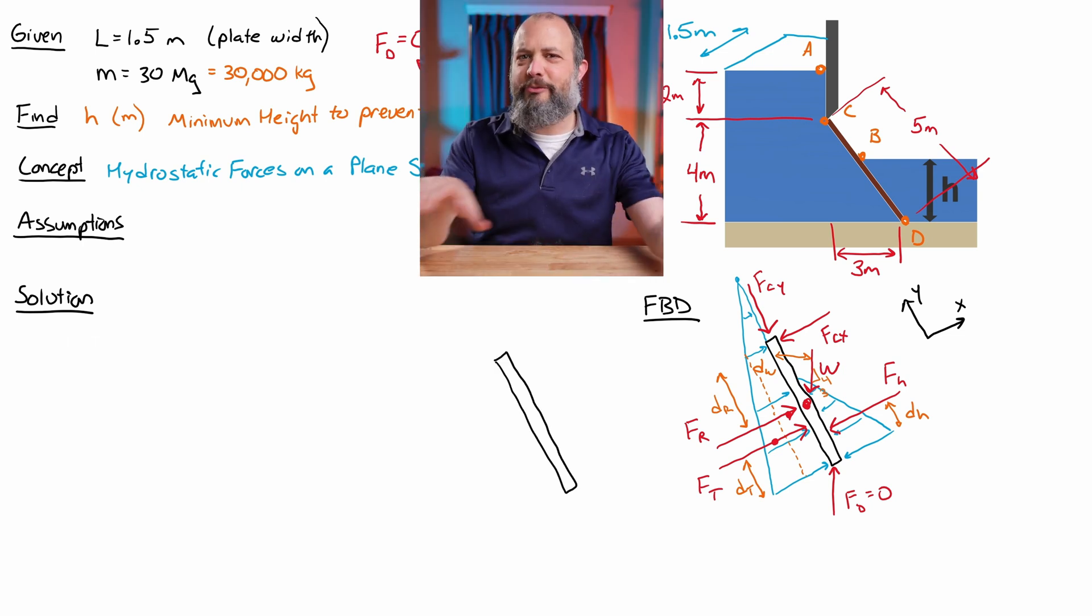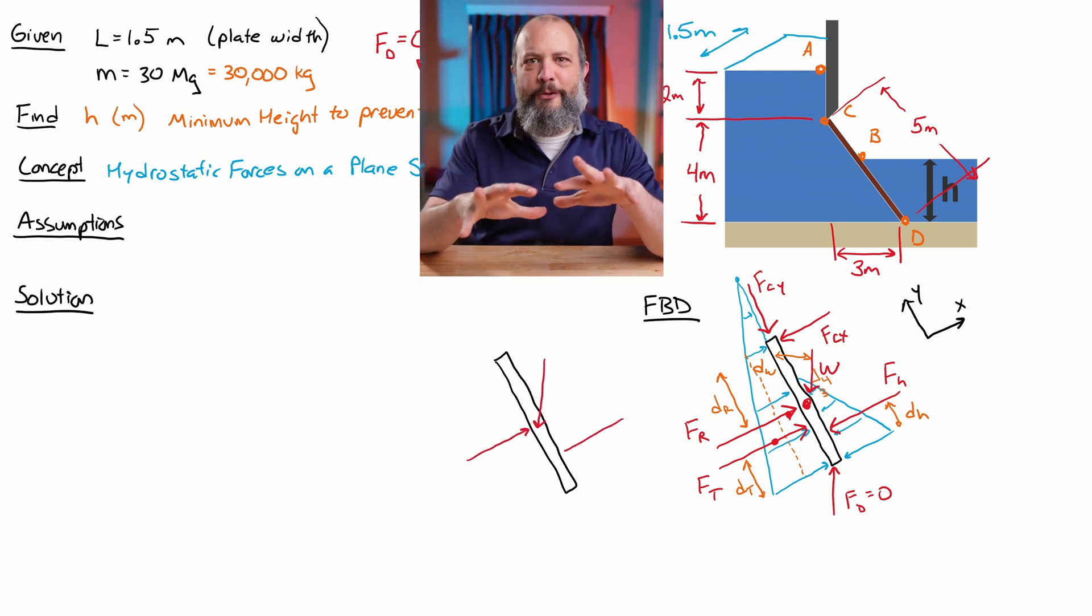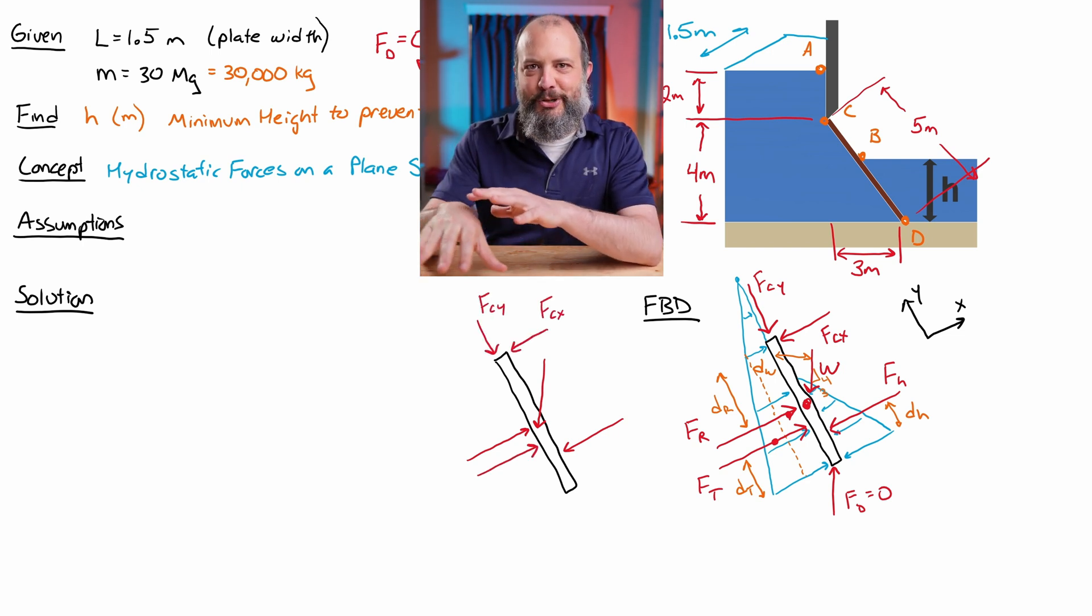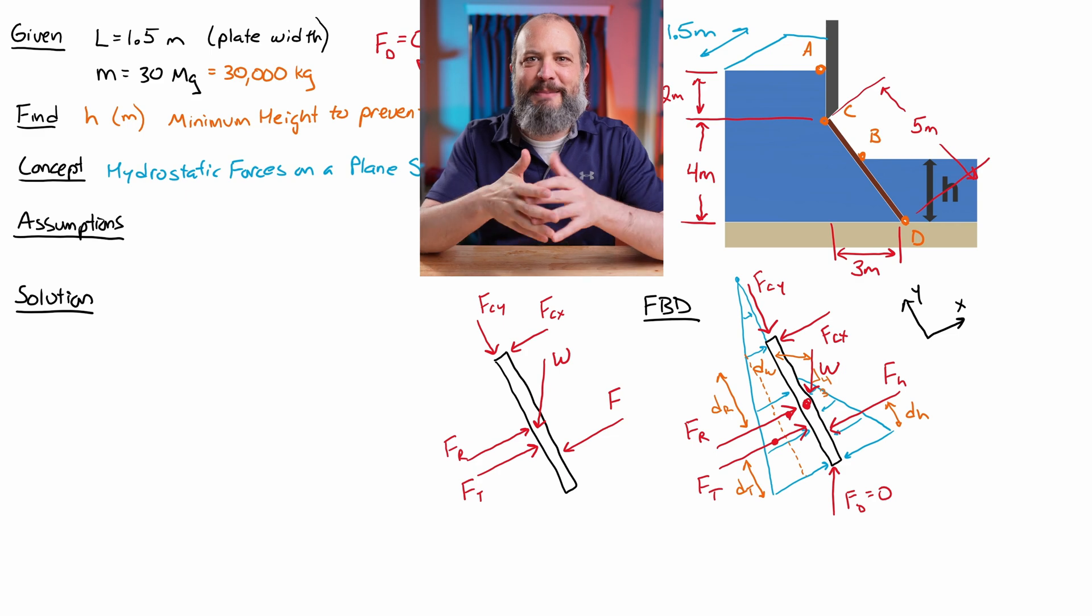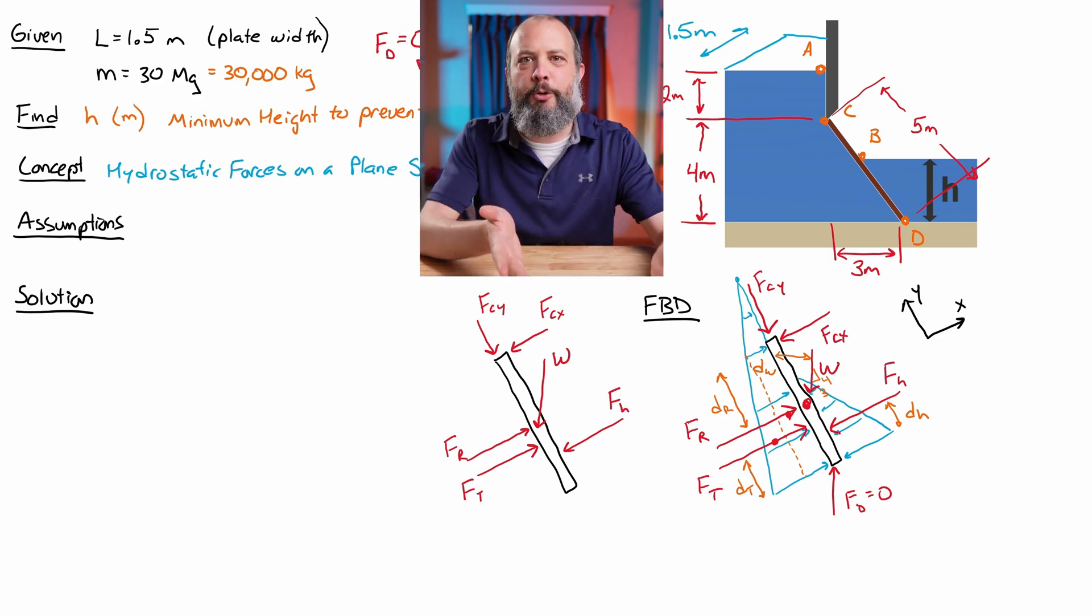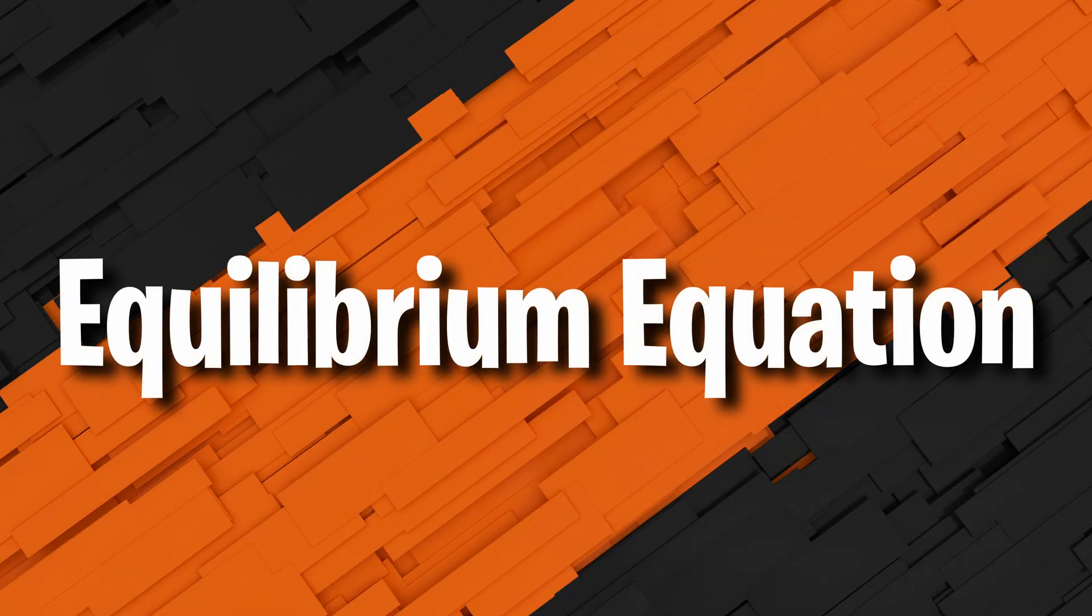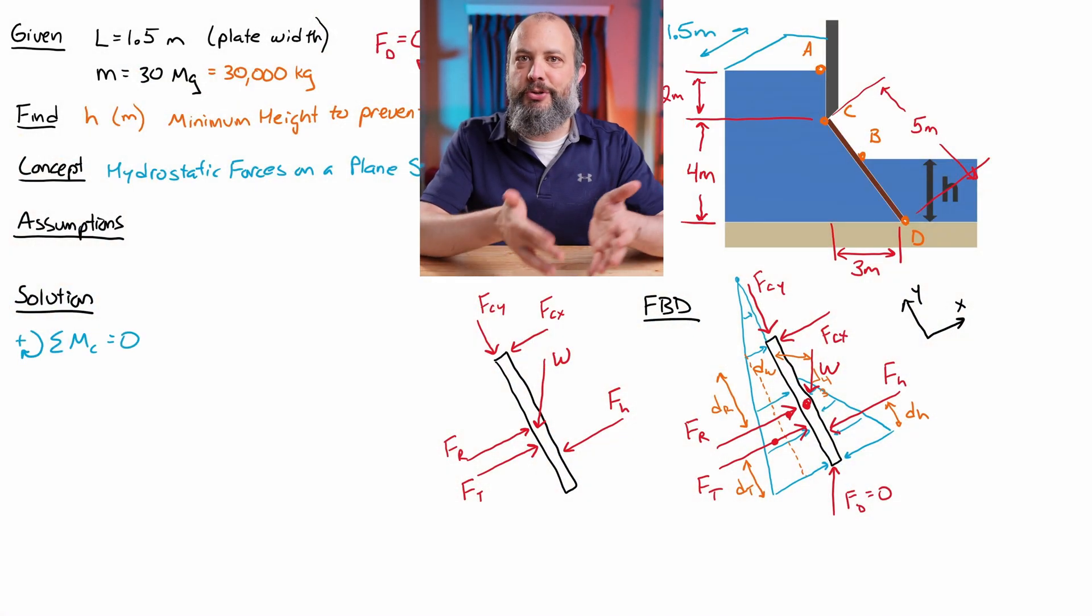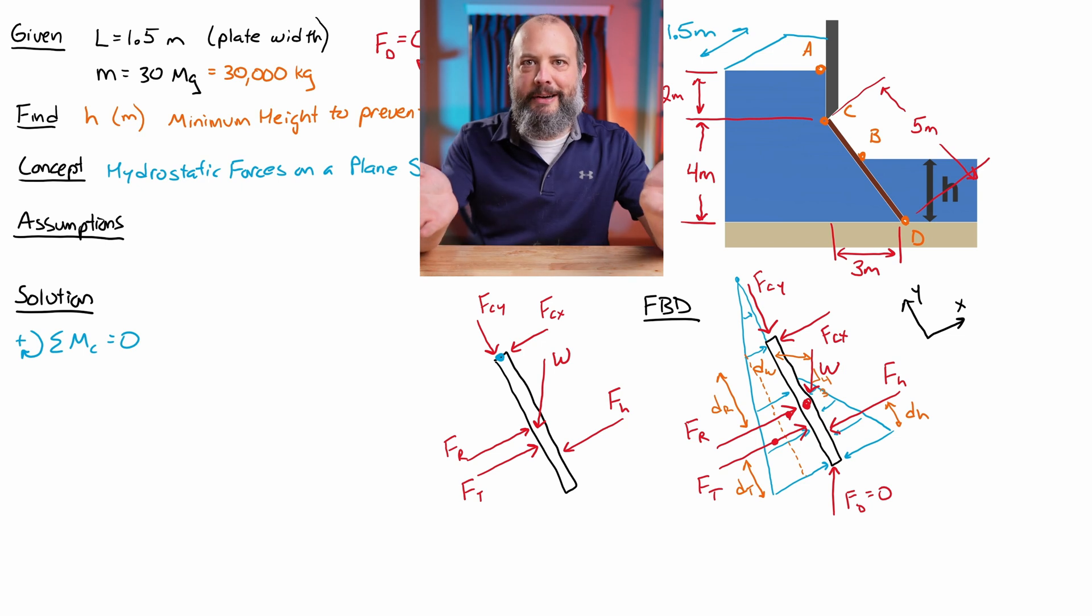And before I write my moment equation, I'm just going to write another cleaner, easier version of this free body diagram that just has the forces themselves on it so that I don't get confused and accidentally miss something when I write out my moment equation. So the pivot point for this gate is at point C. So I sum moments about point C. I arbitrarily choose clockwise as positive. You can choose the other way. It won't matter.